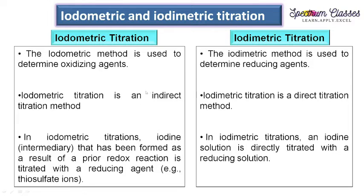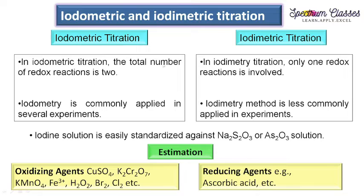Coming to the third point, which is an elaboration: in iodometric titration, iodine behaves as an intermediary that is formed as a result of a prior redox reaction, and it is titrated against a well-known reducing agent — sodium thiosulfate solution. In iodimetric titration, an iodine solution is directly titrated with a reducing agent. In iodometric titration, the total number of redox reactions is two, whereas in iodimetric titration only one redox reaction is involved.